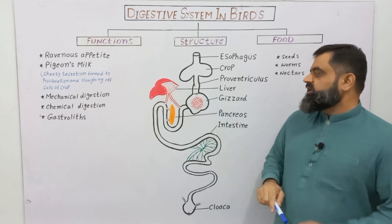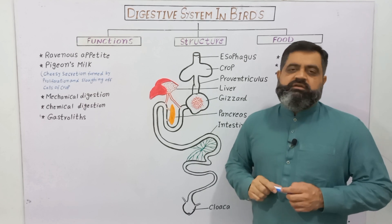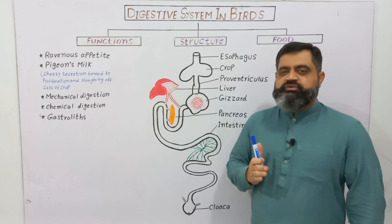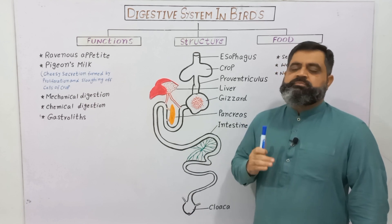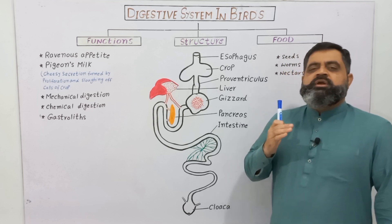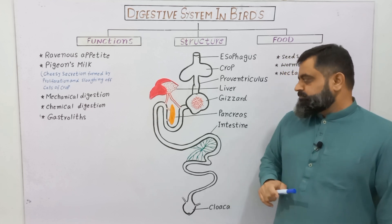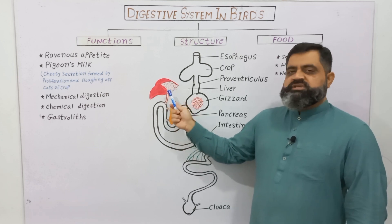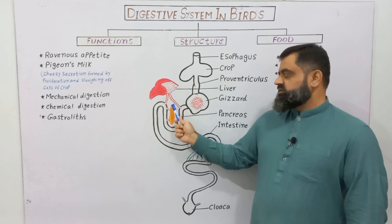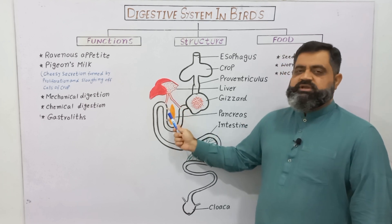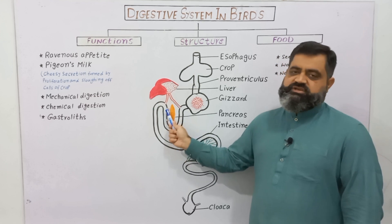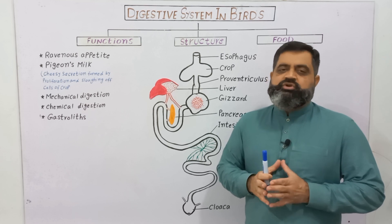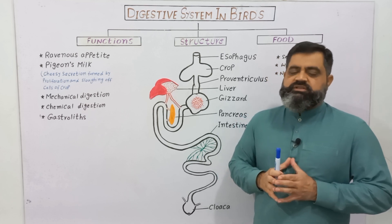HCl and pepsinogen enzymes are produced in the gizzard, which help to soften the food, kill microorganisms, and begin protein digestion into peptides and amino acids. Food is then gradually transported into the duodenum, where secretions from the liver — known as bile — and from the pancreas — known as pancreatic juice — are released. In this part of the intestine, all components of food — carbohydrates, lipids, and proteins — are digested in the small intestine.